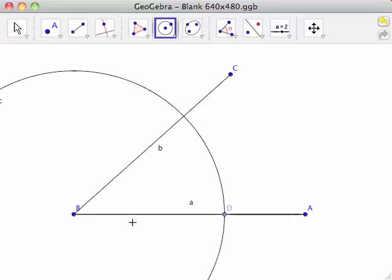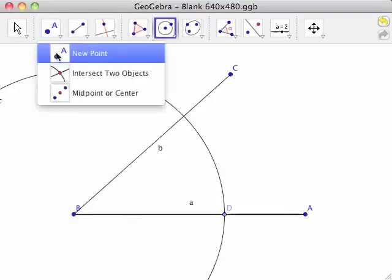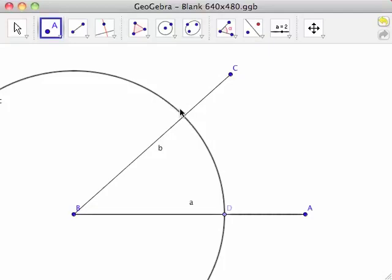Select the new point tool from the point toolbar and click on the intersection of circle C and line segment BC. This creates point E.